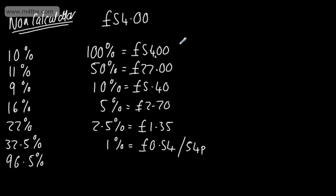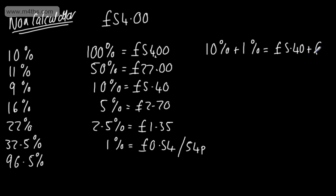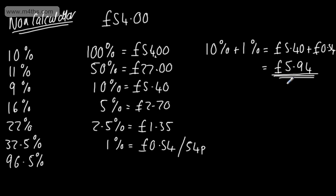If I think about 11%, that's going to be 10% plus 1%. So I add £5.40 and 54p (0.54), giving a total of £5.94. So 11% of £54 is £5.94.